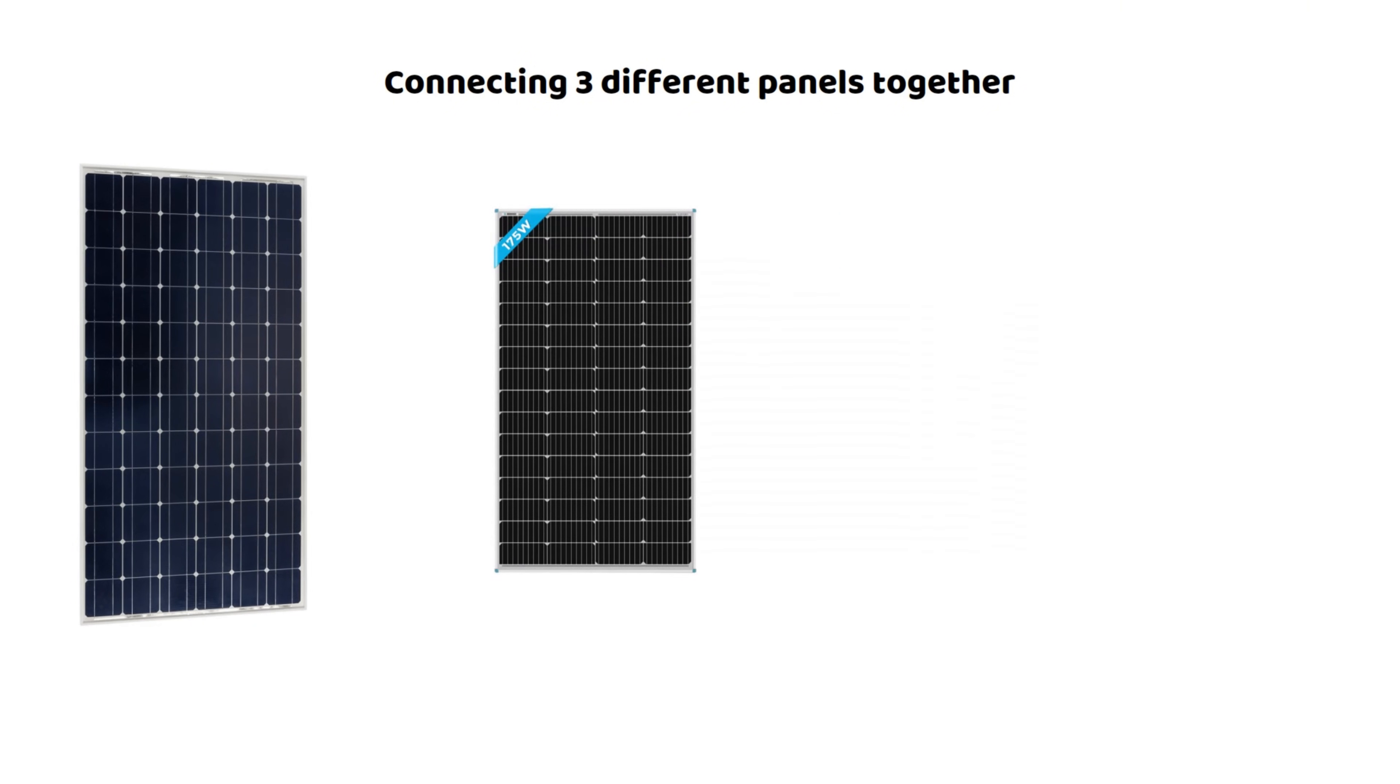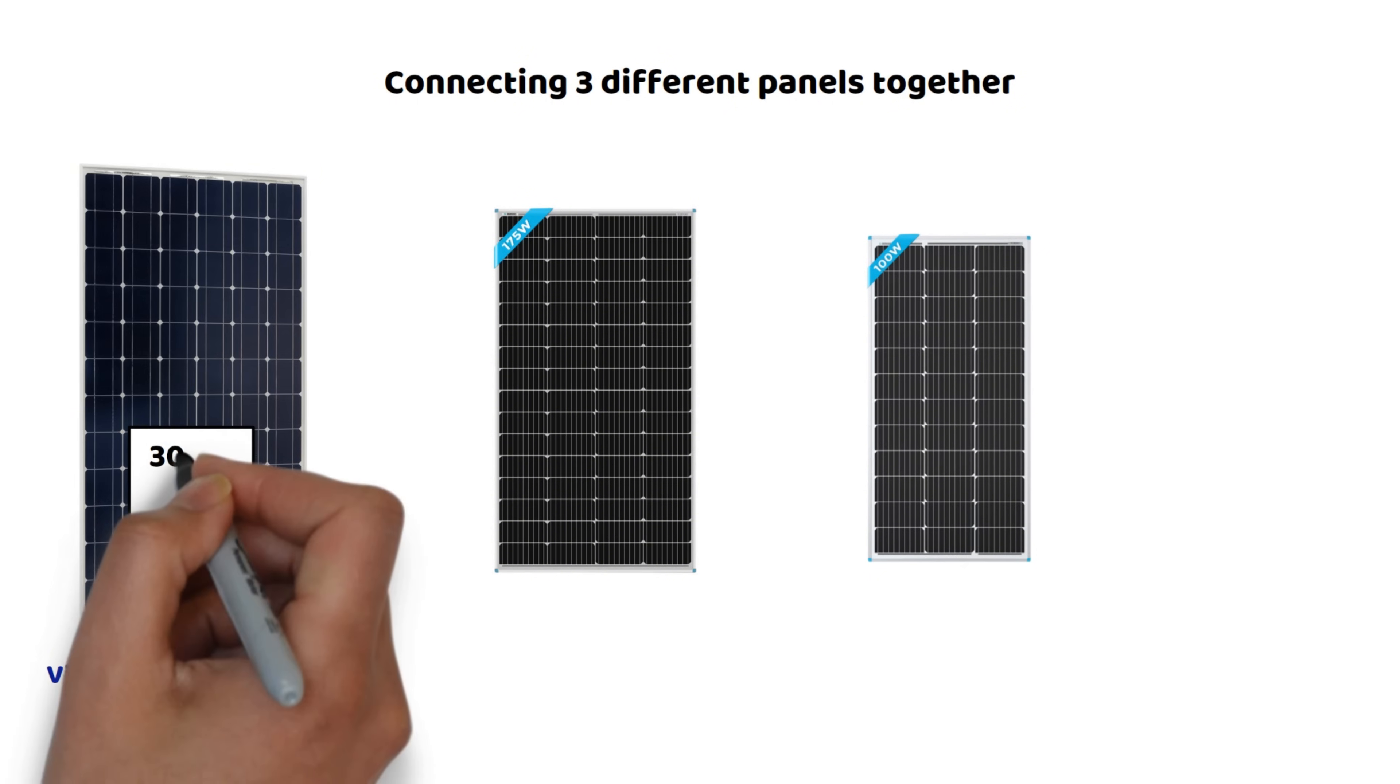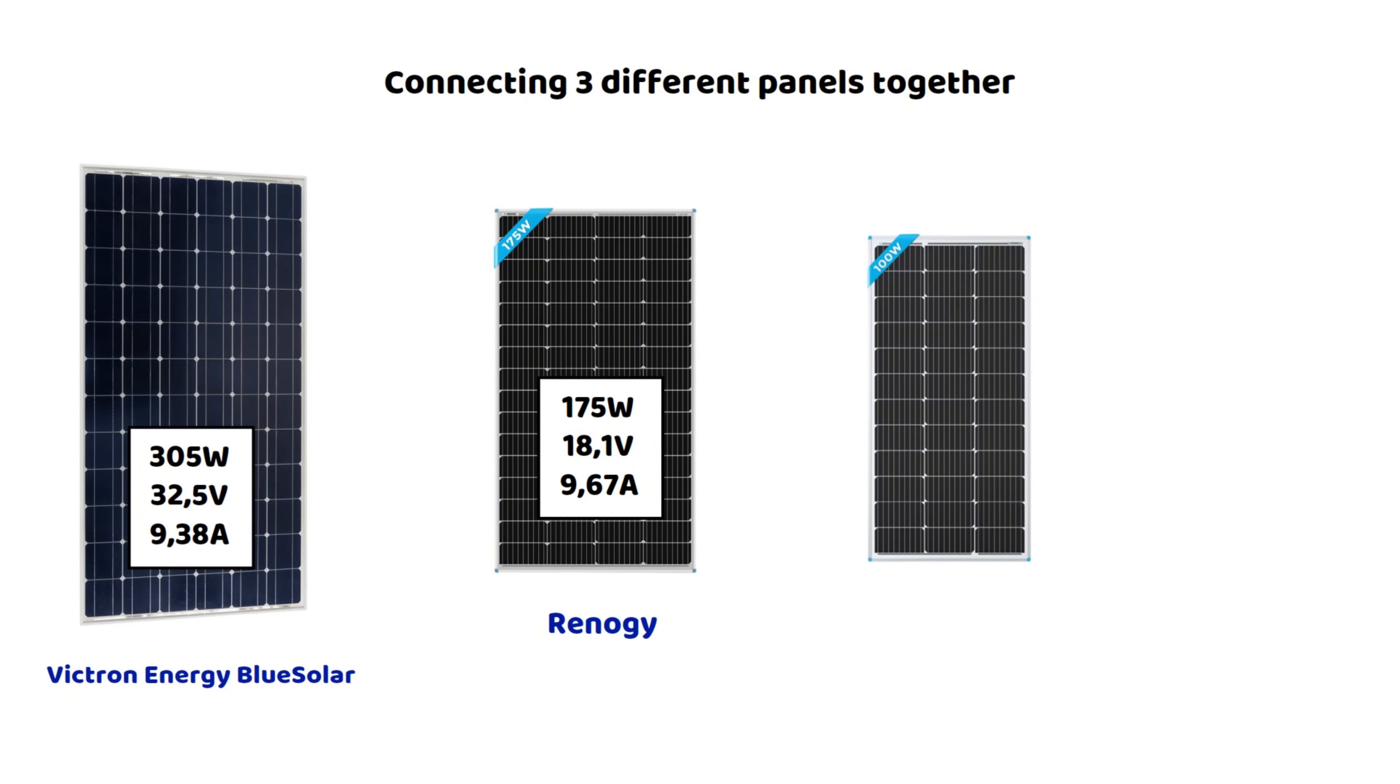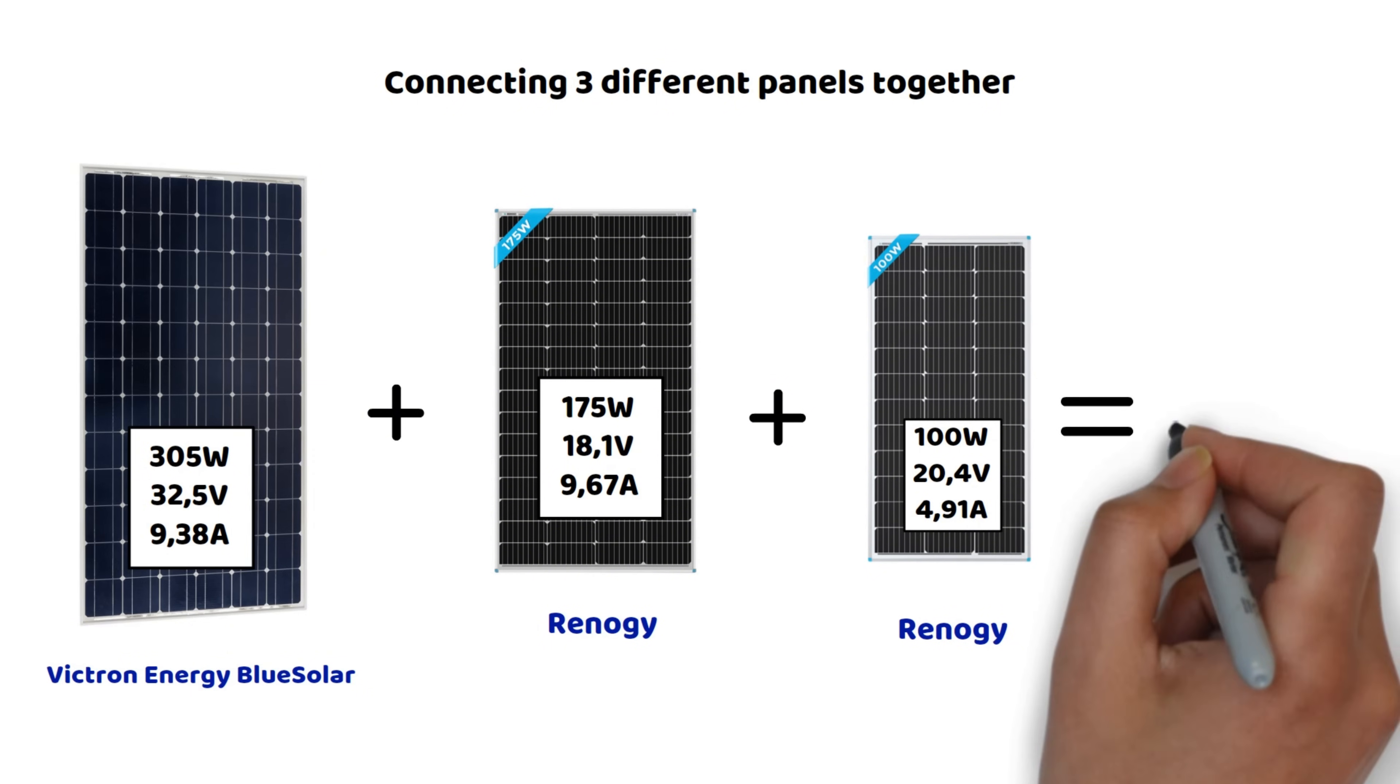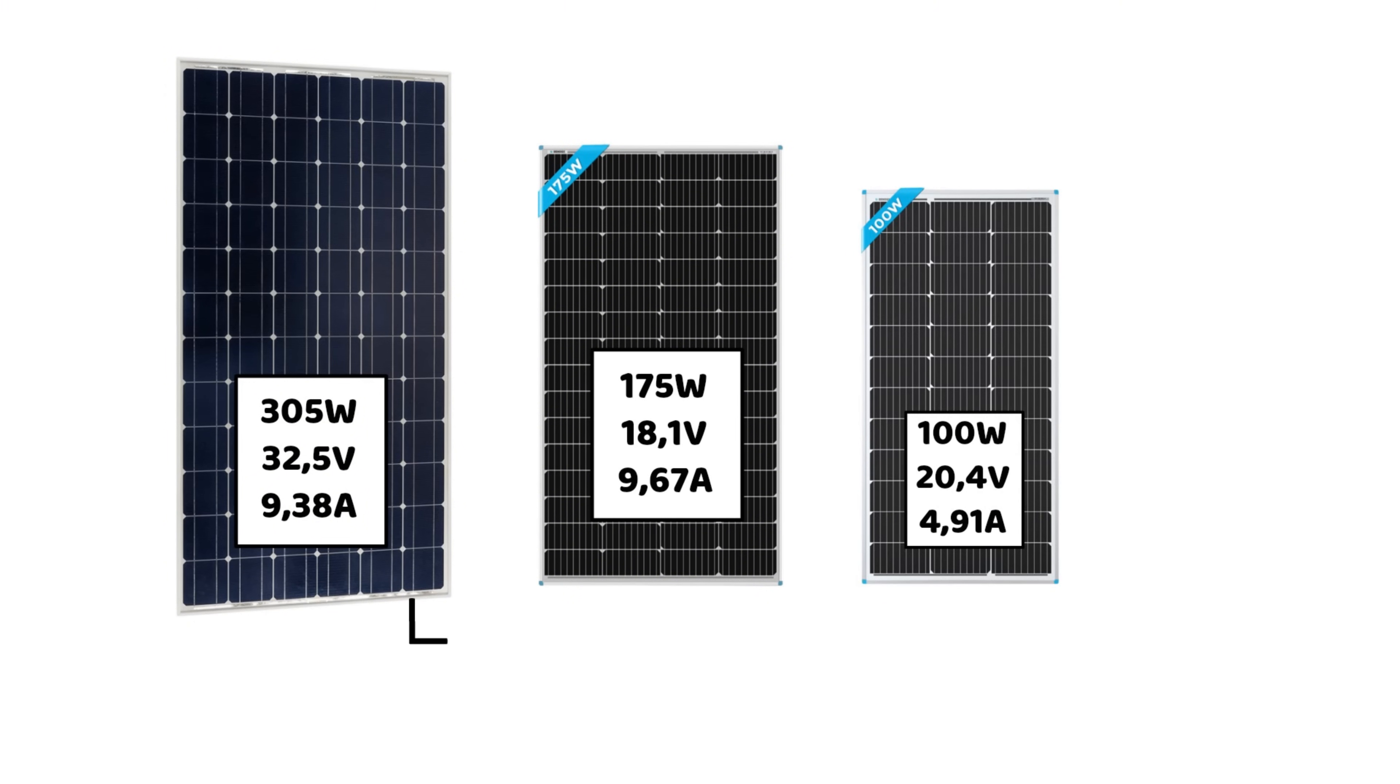Let's now move on to a much more interesting setup for your understanding, which I hope will make you an expert on series parallel wiring, this time with three panels of different specifications. Panel specifications: panel 1, 305 watts, 32.5 volts, 9.38 amps. Panel 2, 175 watts, 18.1 volts, 9.67A. Panel 3, 100 watts, 20.4 volts, 4.91 amps. In reality, I added a 100 watt Rinogi panel, and you'll see that this significantly changes the results. The total theoretical power of this system is 580 watts. We'll start by wiring these three panels in series.